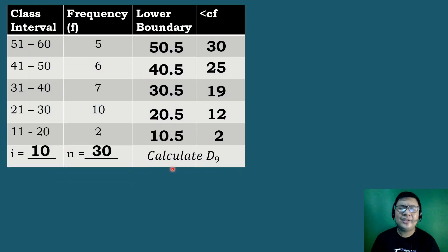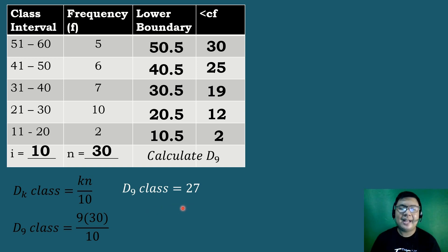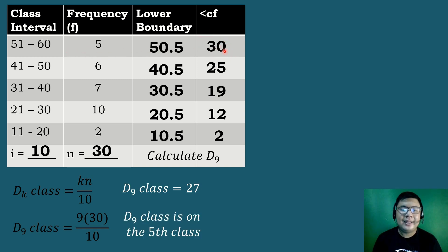Let's have our last example. Using the same given, let's calculate the value of Decile 9. We use the formula k times n all over 10 to identify the decile k class. Substituting, k equals 9 and n equals 30, so 9 times 30 all over 10 equals 270 divided by 10, which equals 27. Our decile class must have a cumulative frequency greater than or equal to 27. The number which is greater than or equal to 27 is 30, so our Decile 9 class is located on the fifth class.